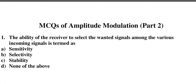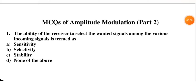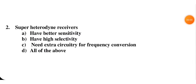Hi everyone. In this video lecture of communication engineering, I am going to discuss the second part of unit one, in which we discuss amplitude modulation MCQs. First question: the ability of the receiver to select the wanted signal among the various incoming signals is termed as — sensitivity, selectivity, stability, or none of the above. The signal which is required for us — this characteristic is called selectivity, so this is the right answer.